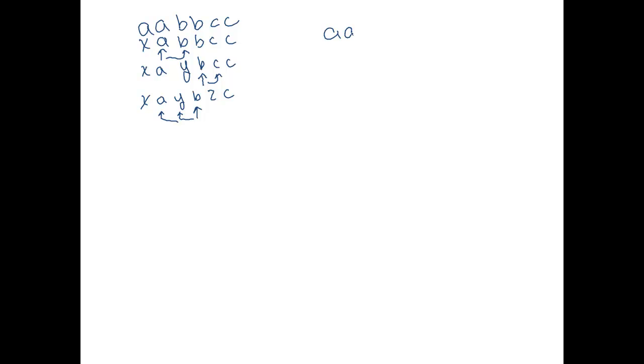Now we've matched an A to a B to a C. So we want to go back to the beginning and do it again. After replacing the C, I go left. Now I'm looking for another A to match, skipping over anything that's not an A. But I don't want to find just any A — I want the A immediately to the right of an X, the first A that's not marked.